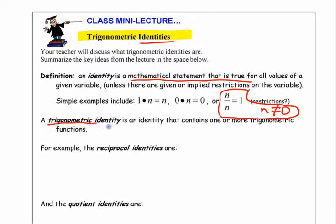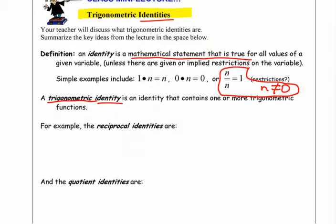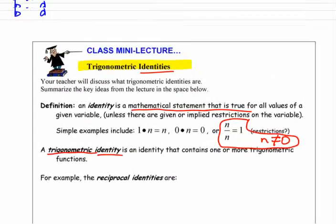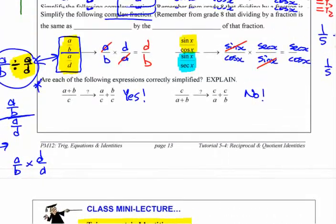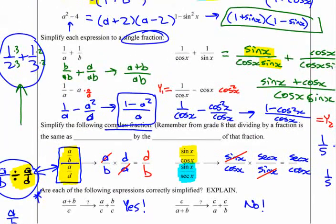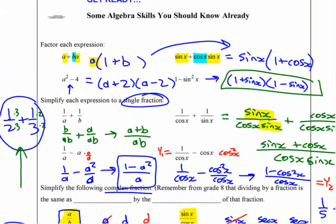A trig identity, then, of course, is some statement that has trig functions in it. We could write trig identities based on some of the things we wrote up here. You could write a trig identity that says this expression right here is always equal to this expression right here. Like, that's a trig identity because all we used is algebra to show that these are equal.